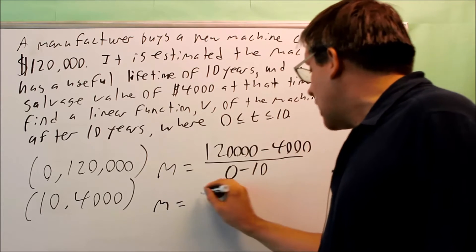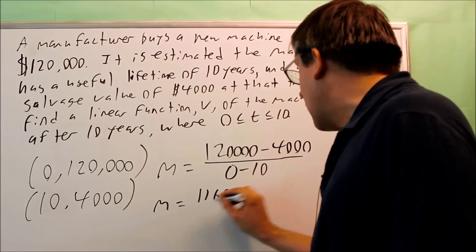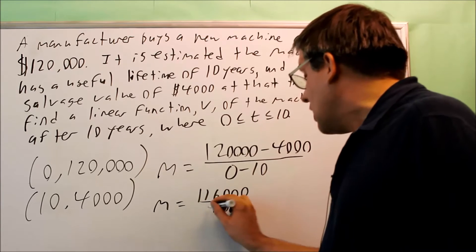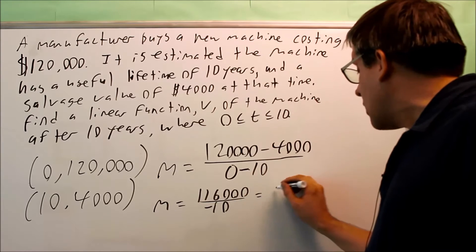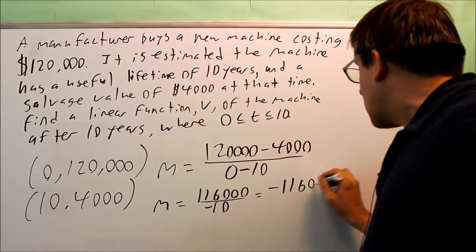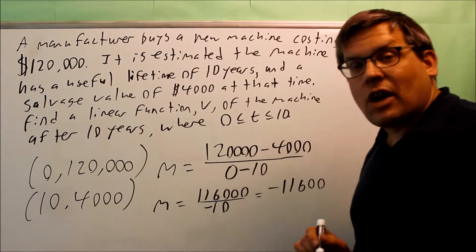Okay, so I get on top 116,000. I'm dividing that by negative 10. There's a negative down here because of this. And that's going to take away one of my zeros, and I get, as a result, negative 11,600.